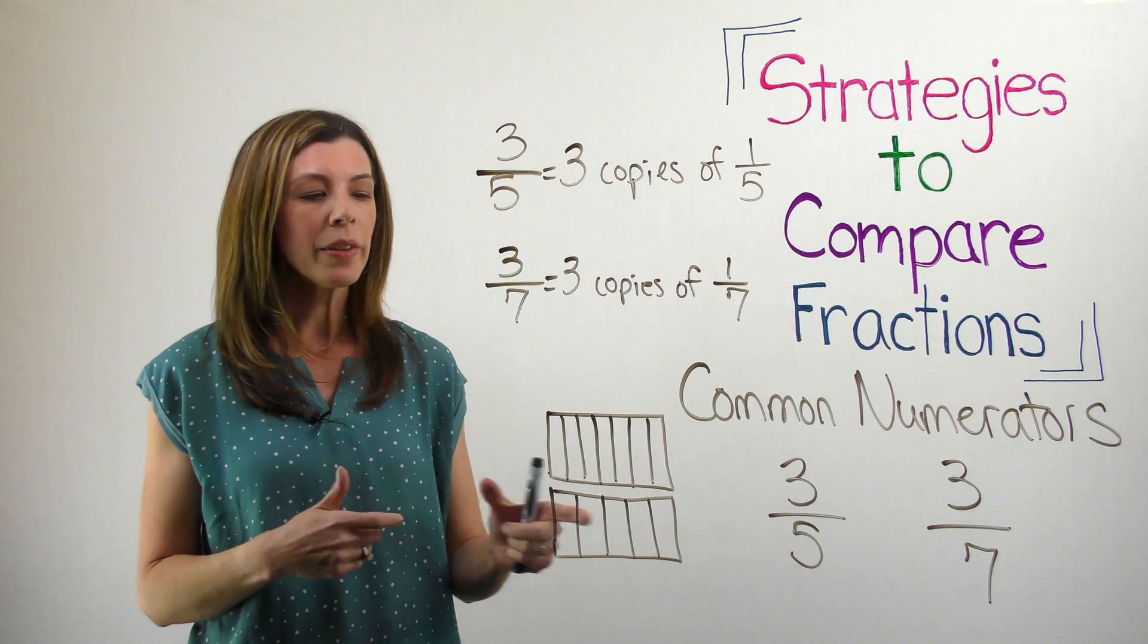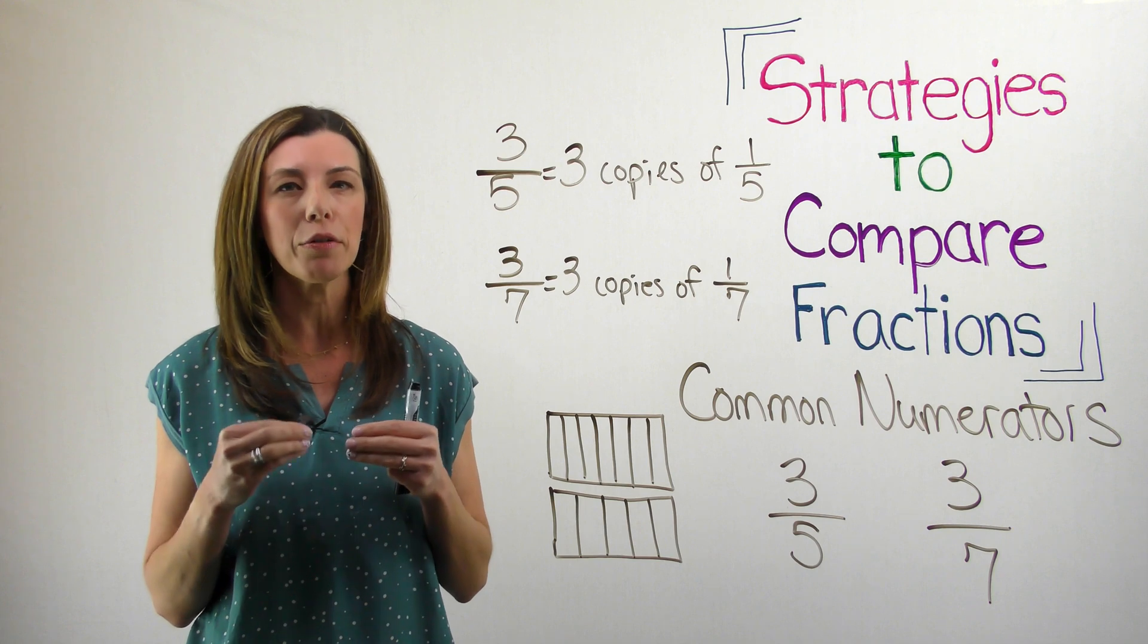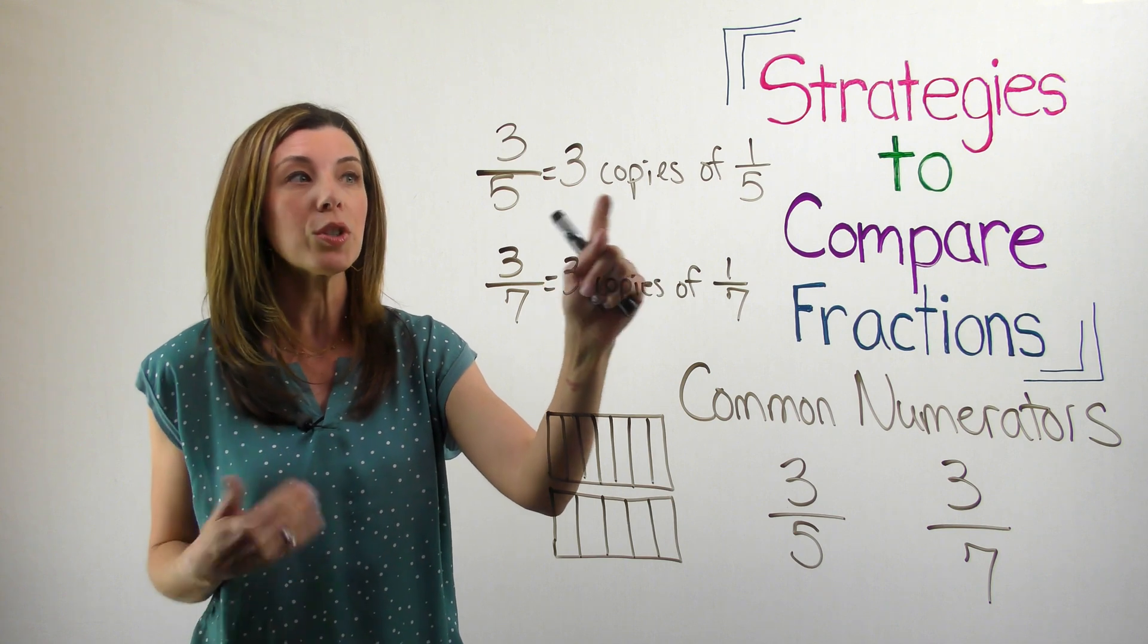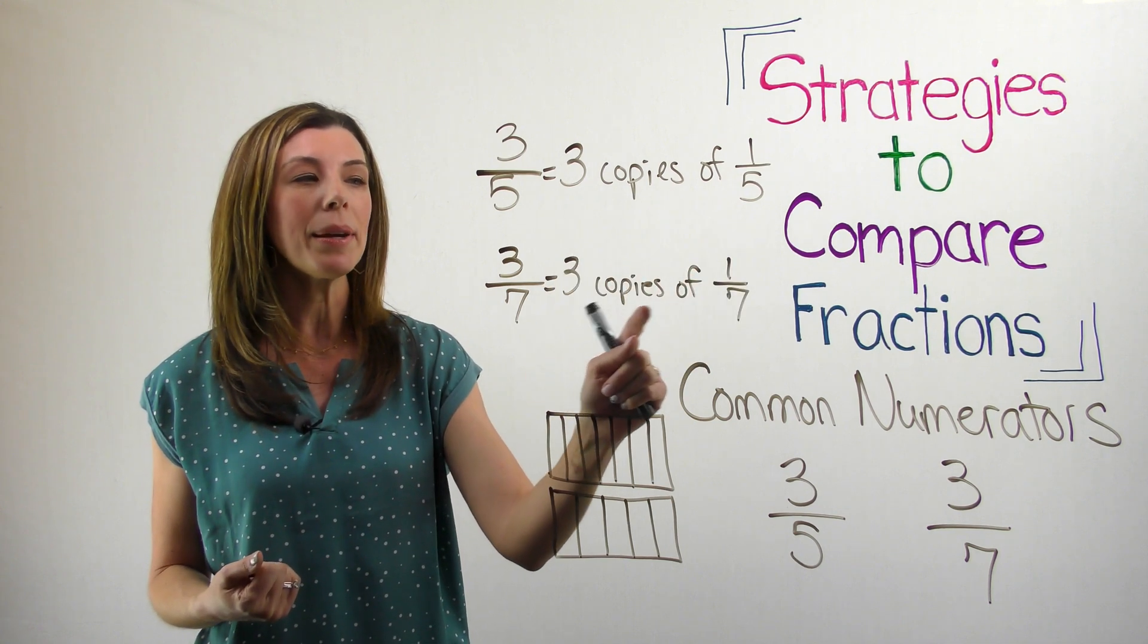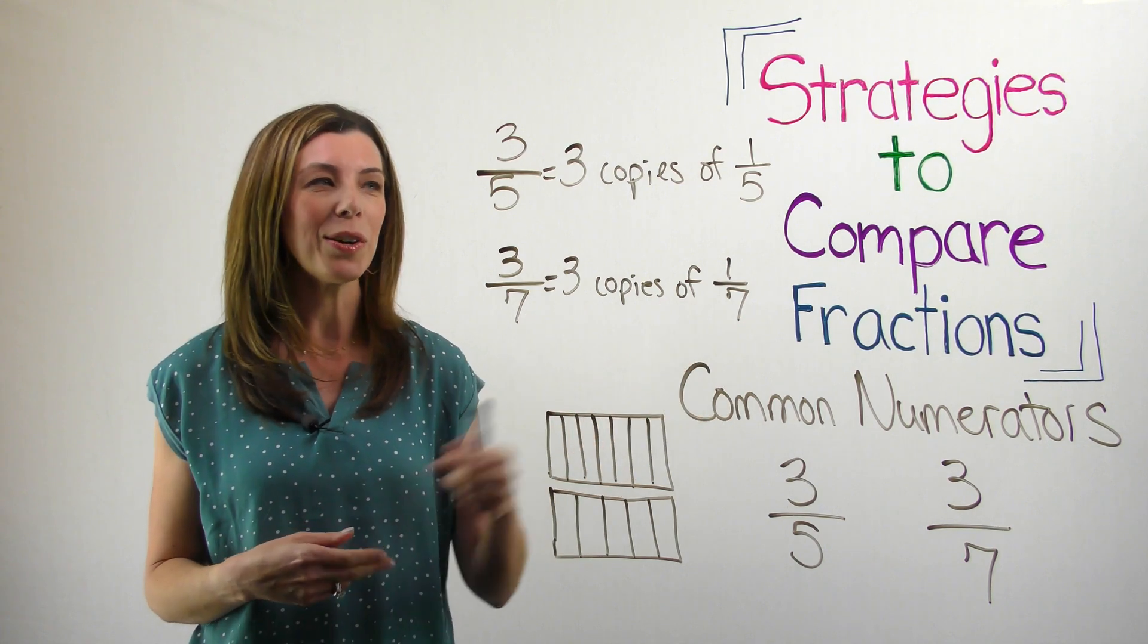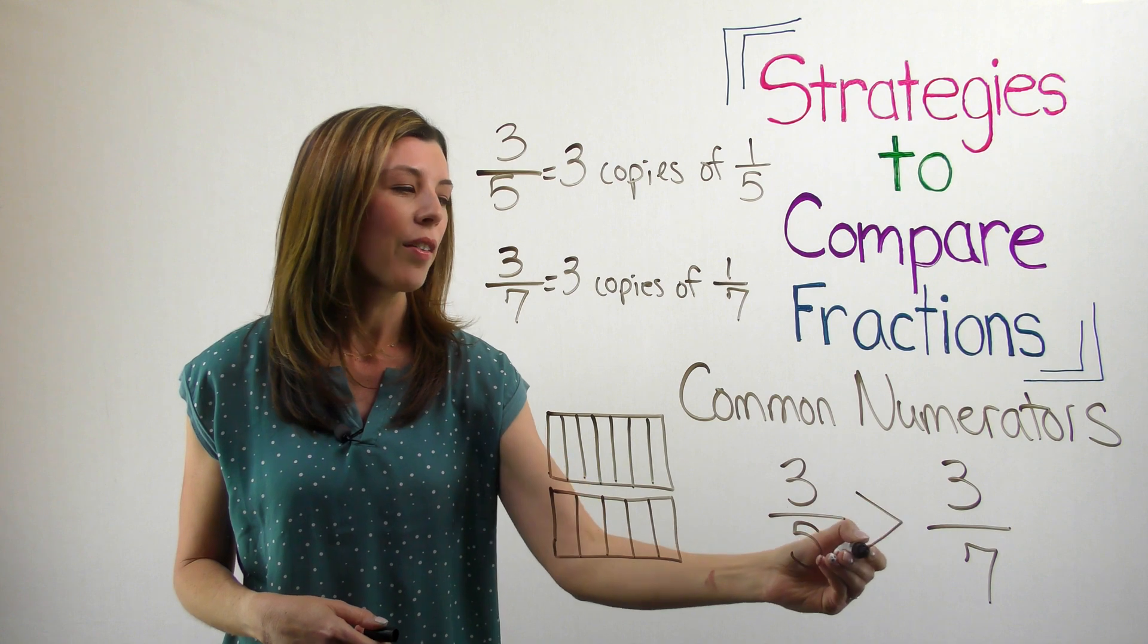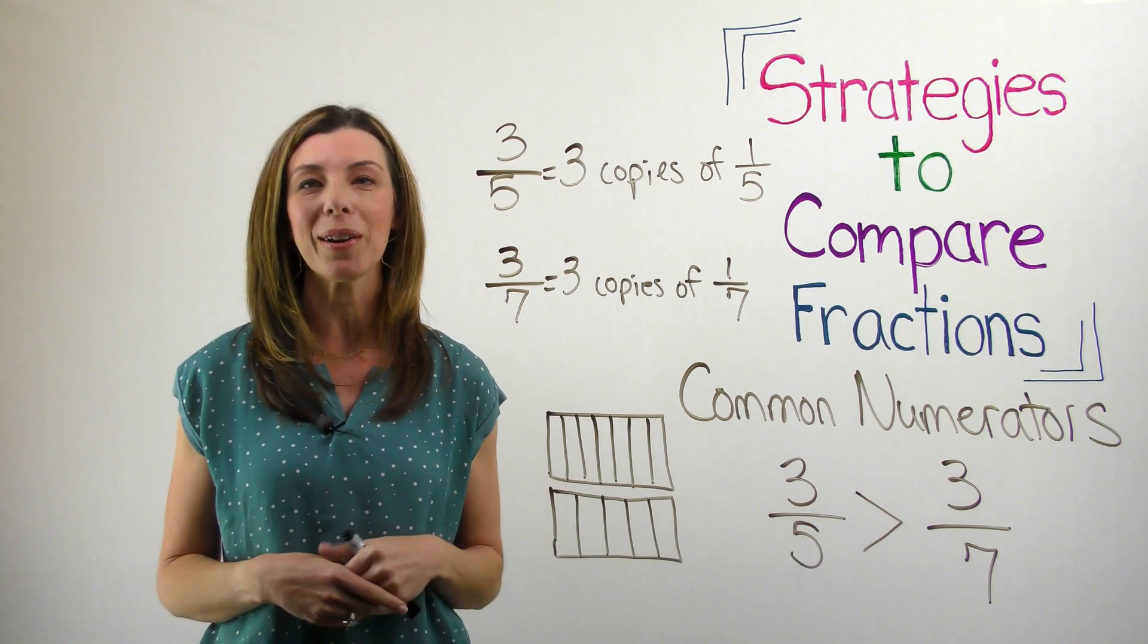And typically, students know that when we cut a whole into a smaller number of pieces, the slices are going to be bigger. So when I have common numerators, if I think of it in terms of three copies or even three slices of one-fifth versus three copies of or three slices of one-seventh, which one is going to be more? Well, I know that fifths are larger than sevenths, so three-fifths is going to be greater than three-sevenths. This is how I can use common numerators to compare fractions.